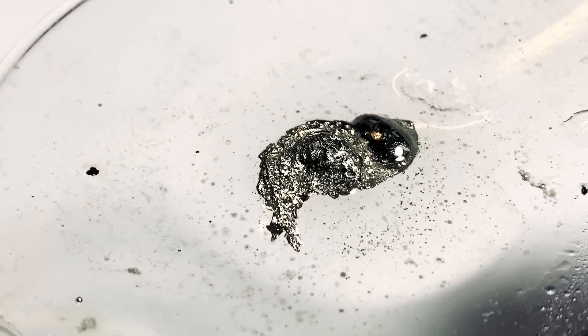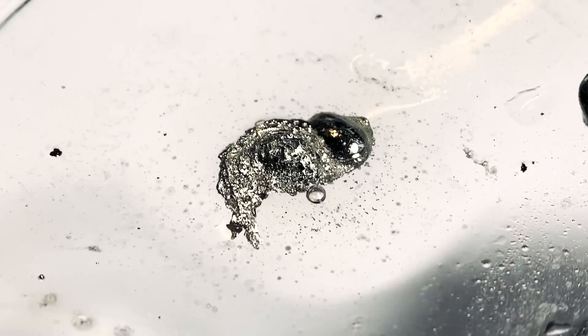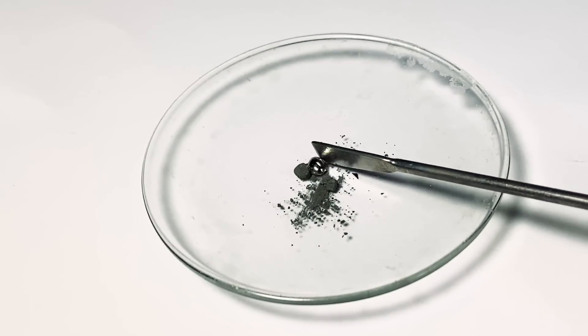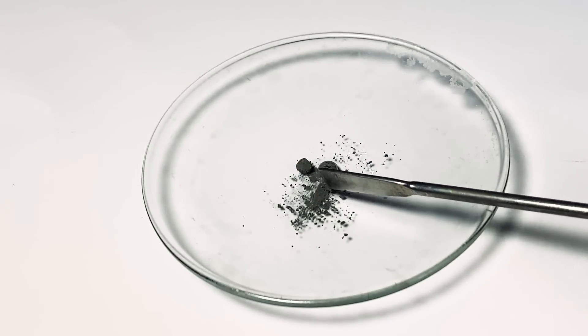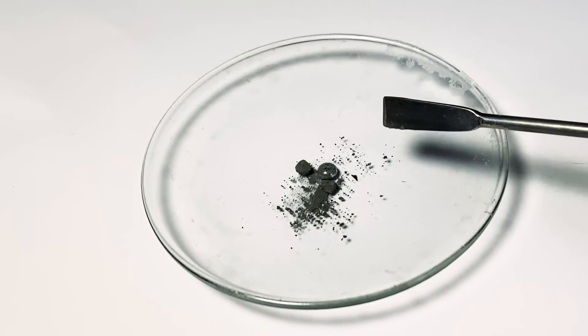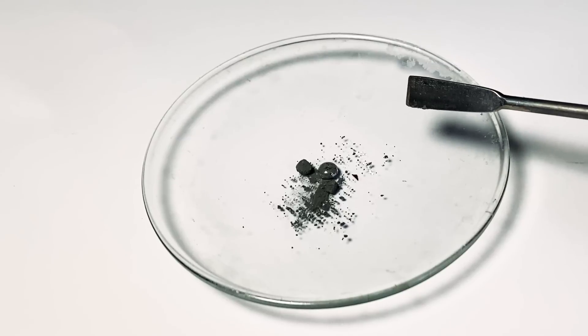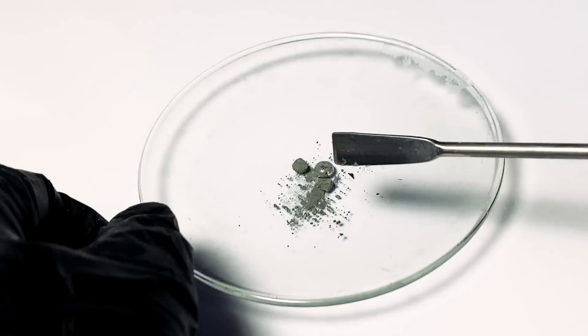Anyway, now it's time for the main event, which is the zinc amalgam and some uranium chemistry. First, I've tried to make the zinc amalgam by adding zinc powder onto mercury directly, but that just didn't seem to work. So I've had to get creative, and for that I'll have to bust out another, more chemical way of making amalgams.